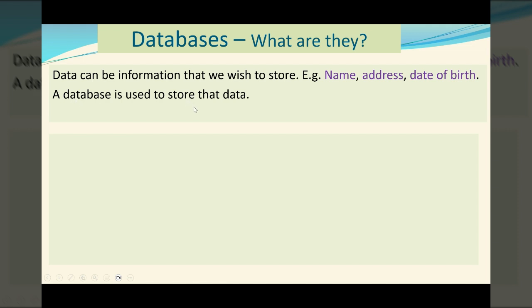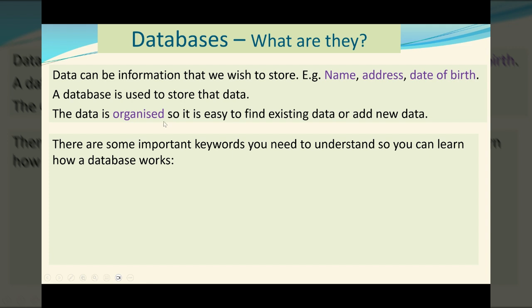Now a database could be using paper. The important thing is the data has to be organized. If we're using paper we would put names alphabetically by surname. That way you could easily find somebody whose surname begins with the letter D. Computers organize the data in a different way. So we've got some important keywords that a computer uses to help set up and create a database. These are fields, records and tables.